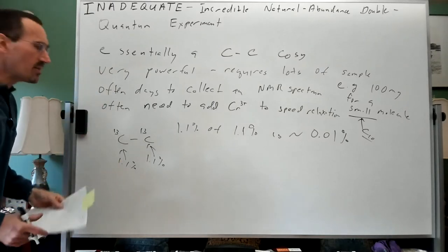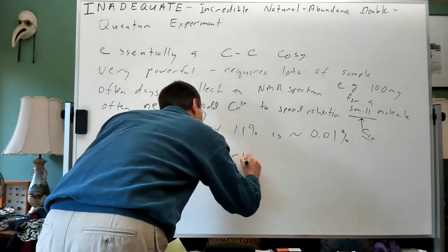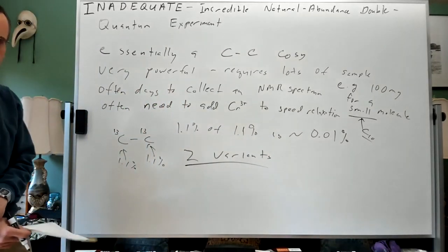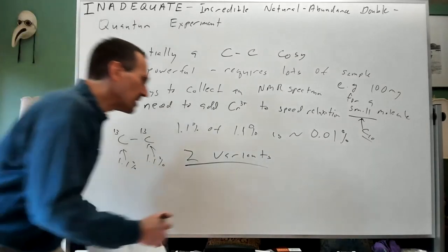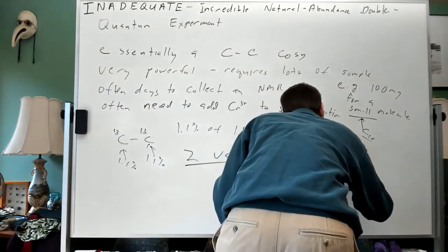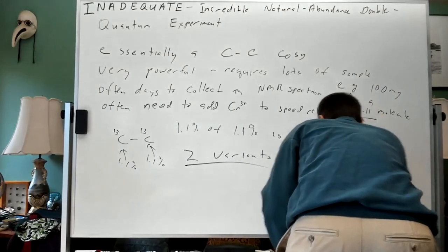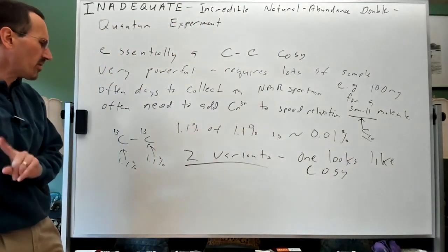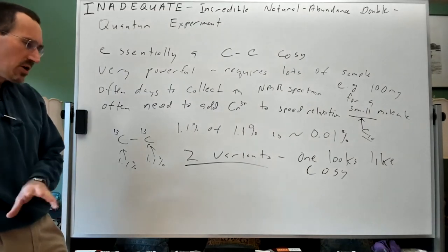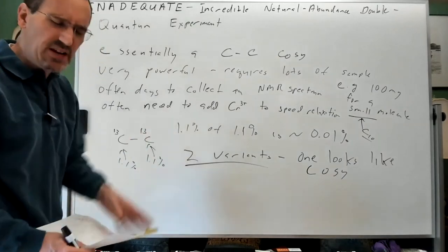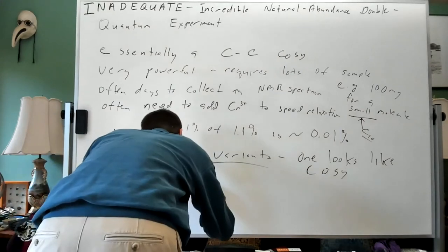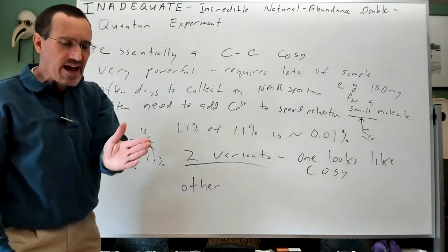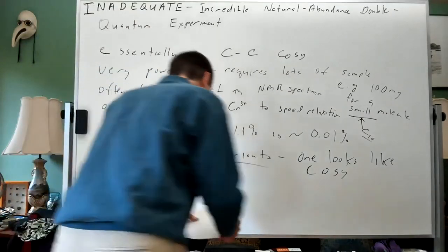Back to the technique that I can't give you an example of. We said it's essentially like a carbon-carbon COSY. There are two variants commonly used for the experiment involving slightly different pulse sequences and data processing. One variant looks like a COSY. The other variant which I'll show you today has what's called a double quantum axis, so the F1 axis is not a carbon-13 spectrum.